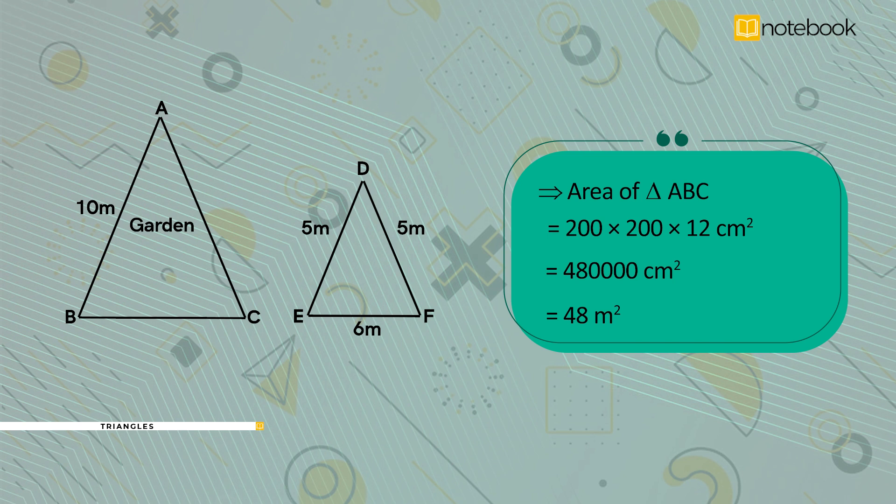Area of triangle ABC is equal to 200 into 200 into 12 centimetre square, that is equal to 480000 centimetre square, which is equal to 48 metre square.